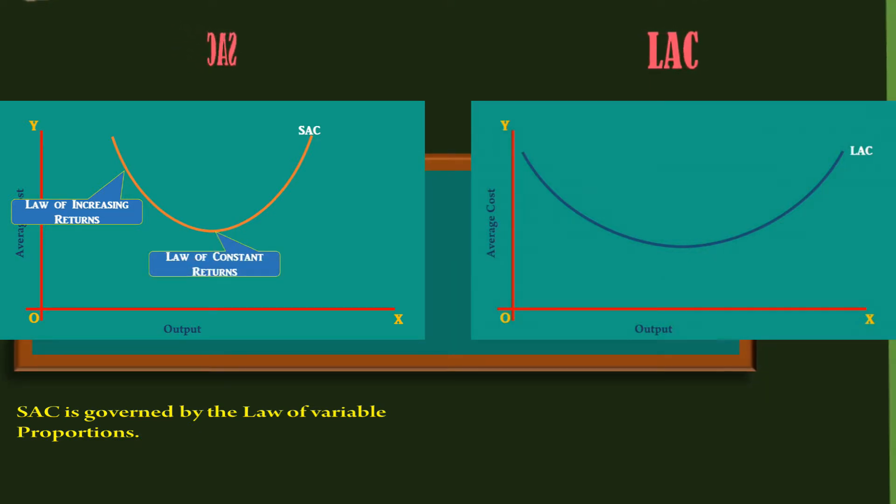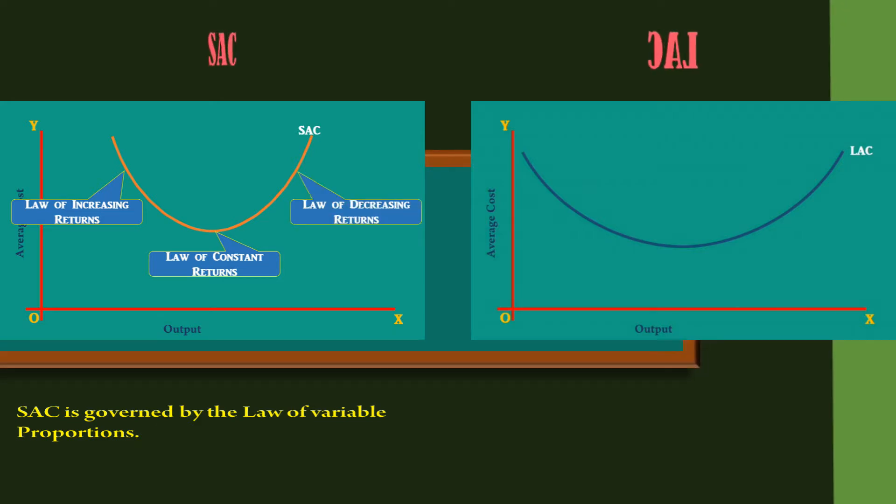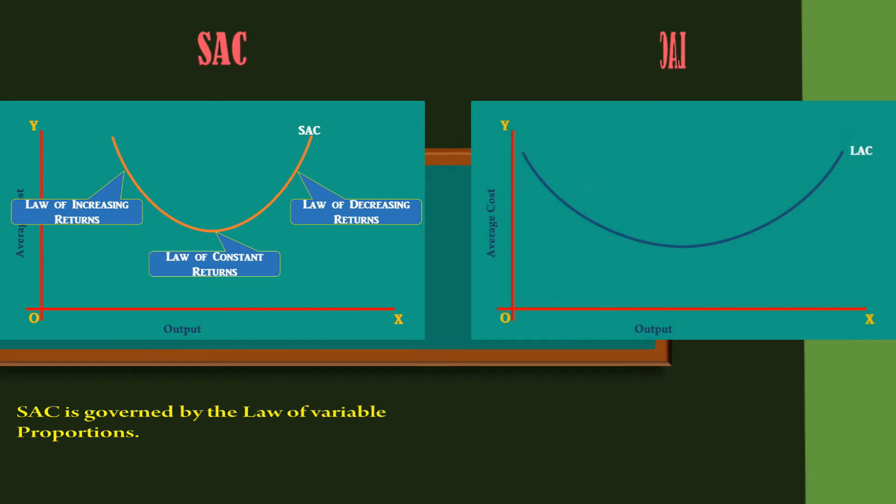At the minimum point, law of constant returns operates. Beyond that, law of decreasing returns makes the short run average cost curve to slope upwards.